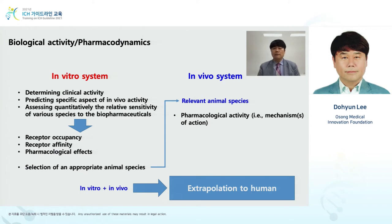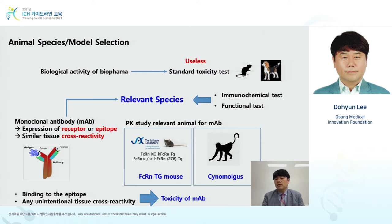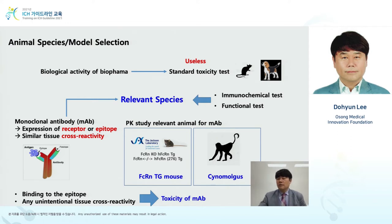In vivo testing requires selecting the most relevant animal species. In vitro and in vivo together are required for extrapolation to human. Atezolizumab's biological activity and pharmacodynamics are checked in both in vitro and in vivo systems as an example. In biopharmaceuticals, biological activity is important. Rodent and non-rodent are recommended, but it all comes down to relevant species for immunochemical tests and functional tests.